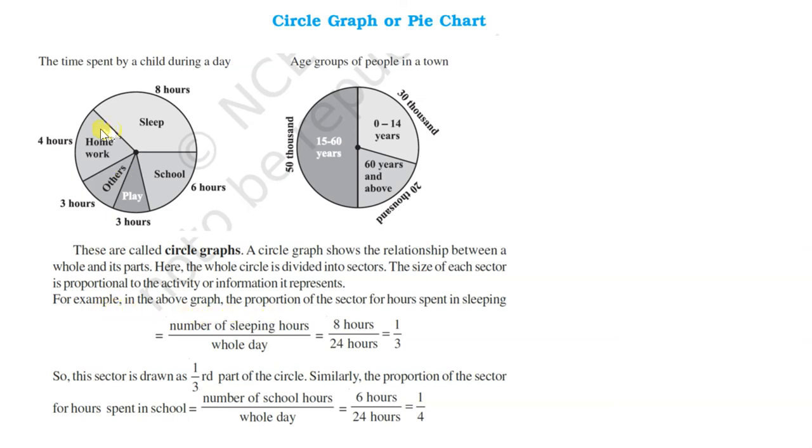Now, like in the first question, let us see how much proportion is the sleep to the whole, how much fraction it is to the whole. For finding this fraction, we will divide the number of sleeping hours with the number of hours in a whole day. The number of sleeping hours is 8 and the number of hours in the whole day is 24.